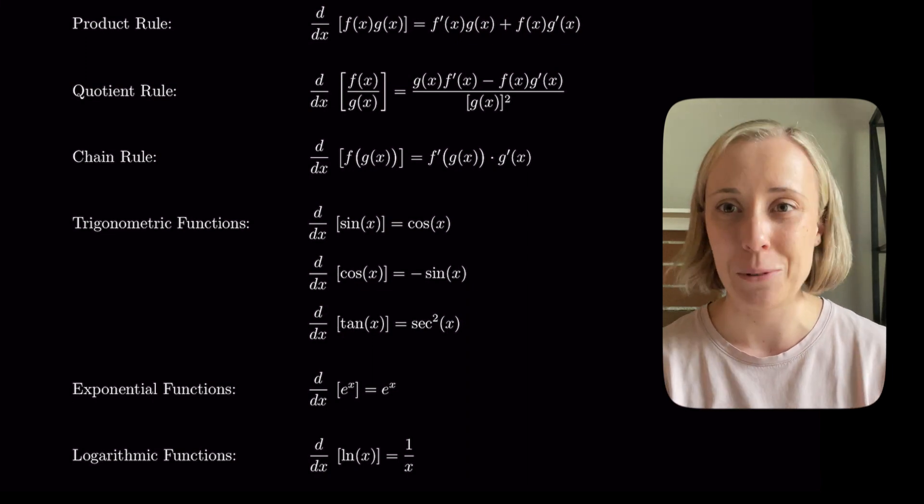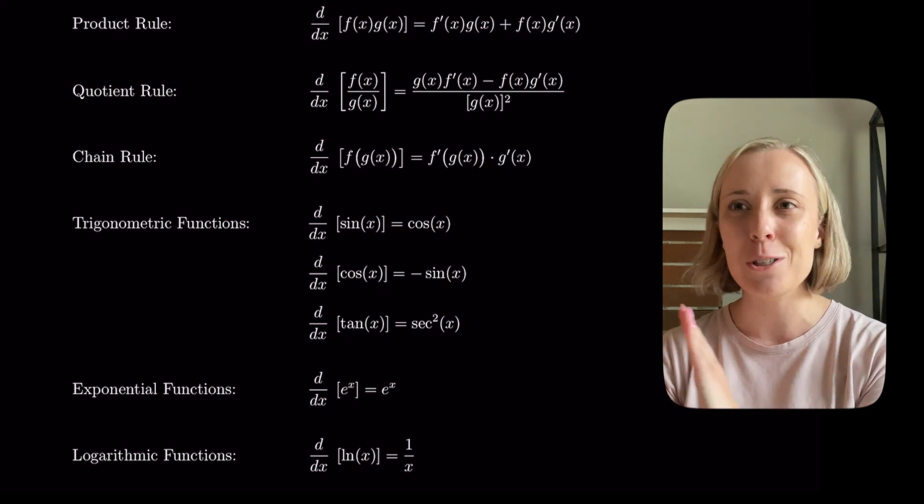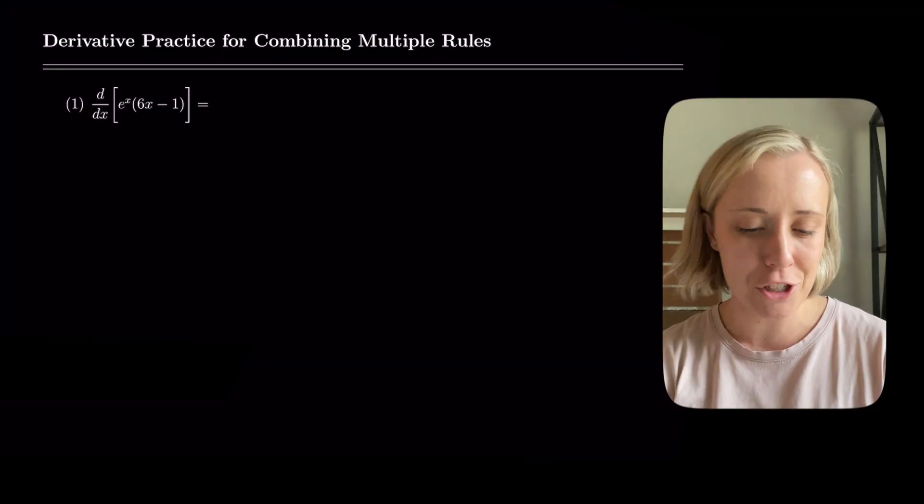These are my basic building blocks for the derivatives in this video. As a general tip, I try to read the problem to myself to understand all the components and identify which rule to use. If I say 'something times something else,' that tells me product rule. If I get totally lost reading it aloud, it's usually chain rule because those are hard to read when there's so much going on.